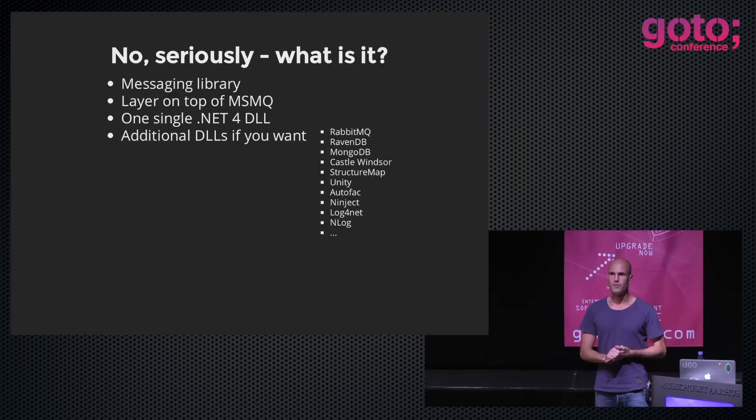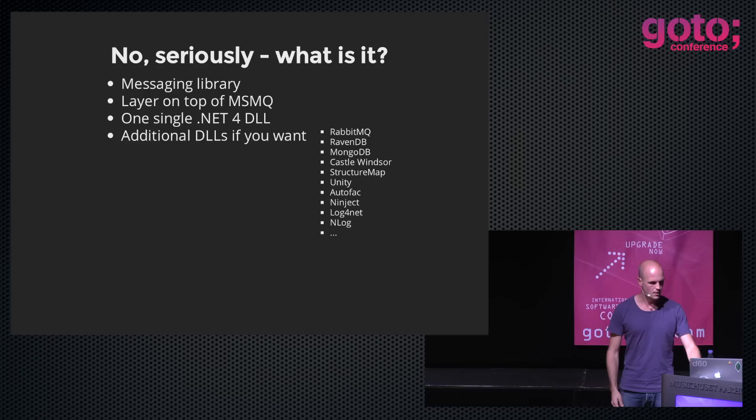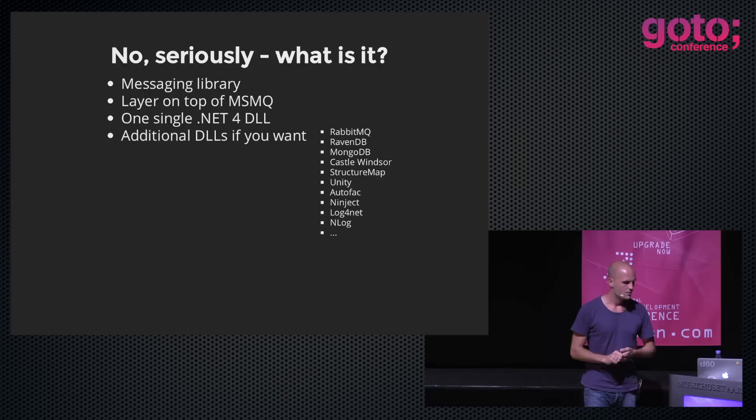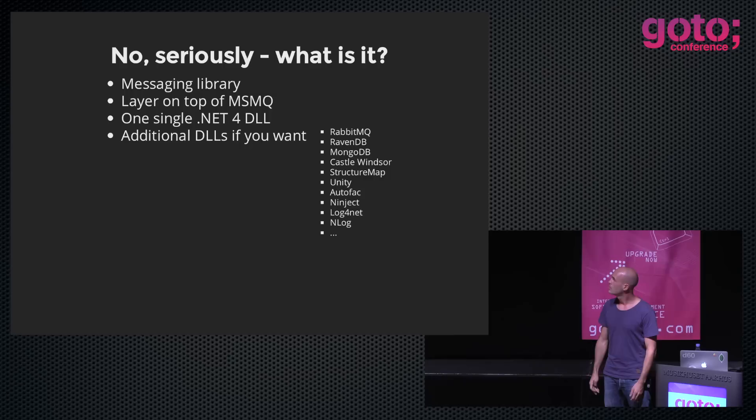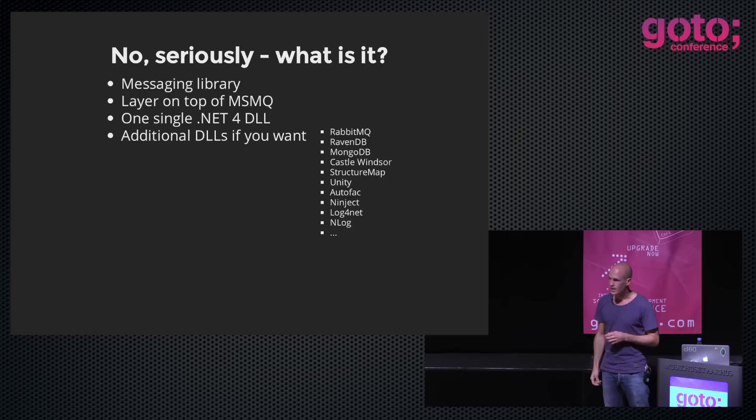Rebus core is one single .NET 4 DLL, so you're guaranteed to be able to include Rebus in your project without any conflicts. If you want integration with different third-party stuff, that can be achieved with small dedicated integration projects. For instance, Rebus can use RabbitMQ as its messaging transport, and it can save stuff in different kinds of databases.